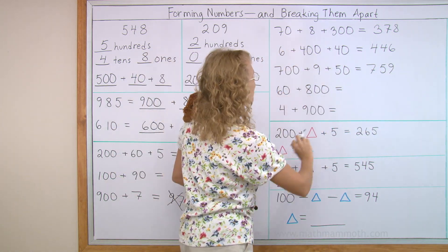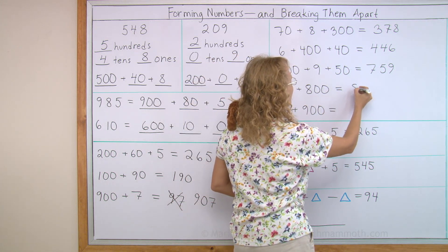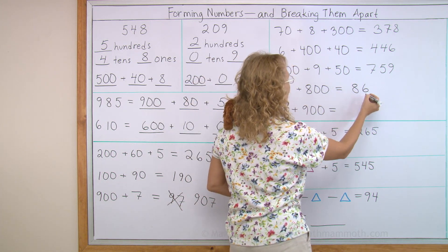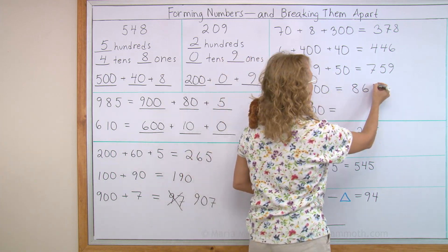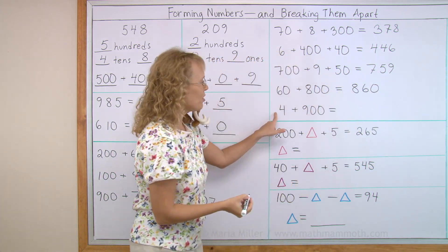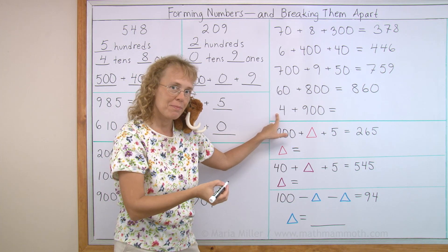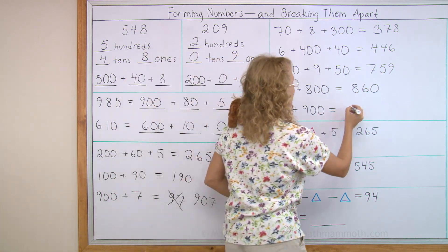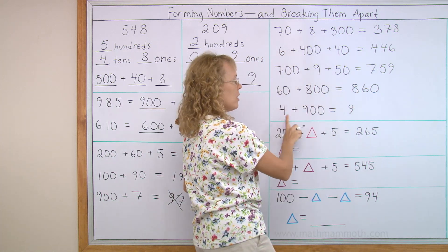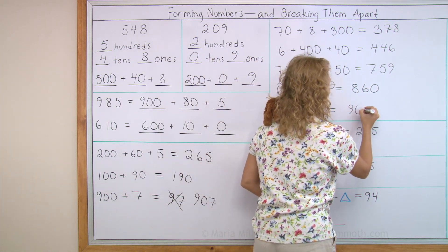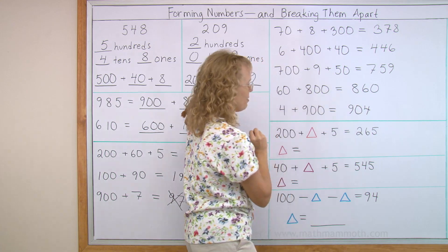Sixty plus eight hundred. Okay, first the hundreds, then the tens, then the ones. But there are none. Put a zero. Four plus nine hundred. Again, first the hundreds, then the tens. But there are none. Remember, you need to put zero there, and then the ones. Nine hundred four.